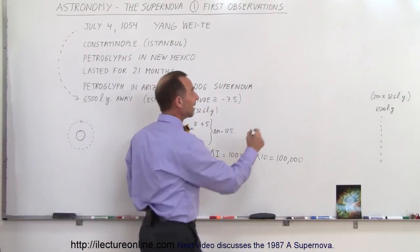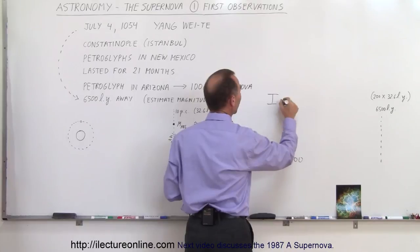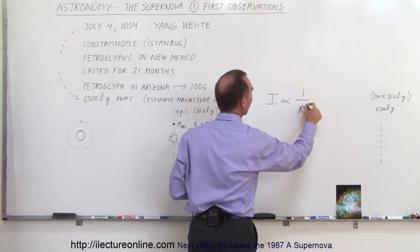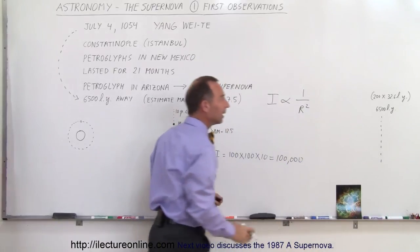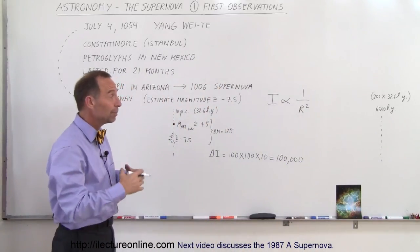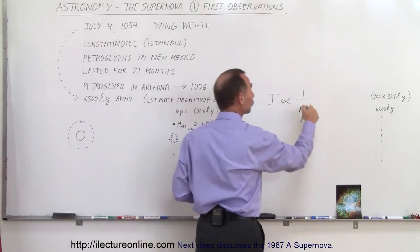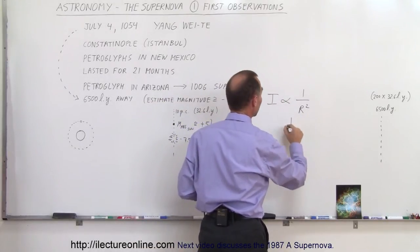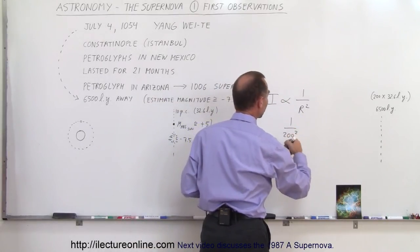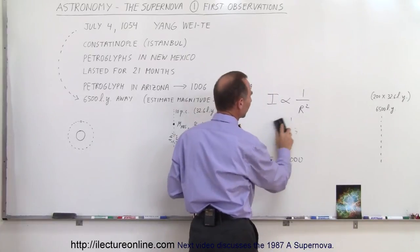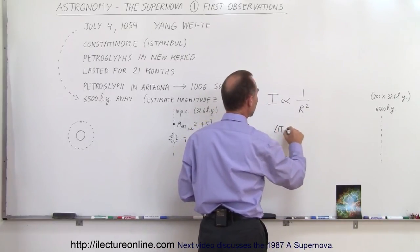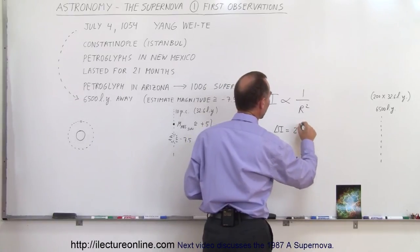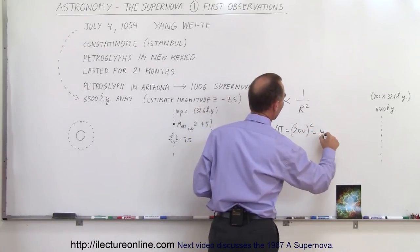And since we know that the intensity of light is proportional to 1 over the distance squared, that means if it happened that much farther away, it would be that much brighter. How much brighter? Well, 1 over 200 squared. So 1 over 200 squared, and of course we want to take the inverse of that because it's how much brighter it would be. So the delta intensity would be equal to 200 quantity squared, which is equal to 40,000.